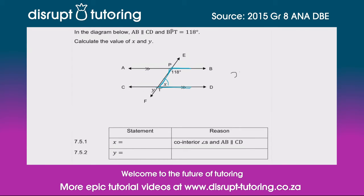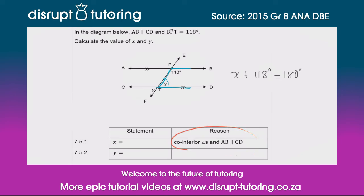We know that x plus 118 should be equal to 180 degrees, and the reason for that is co-interior angles with AB parallel to CD. So all we need to do is subtract 118 from the left-hand side and do the same thing on the other side.